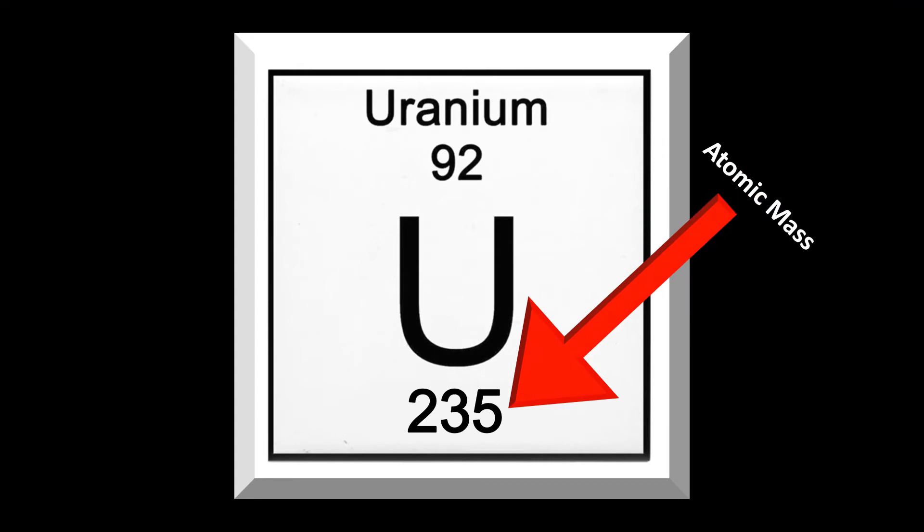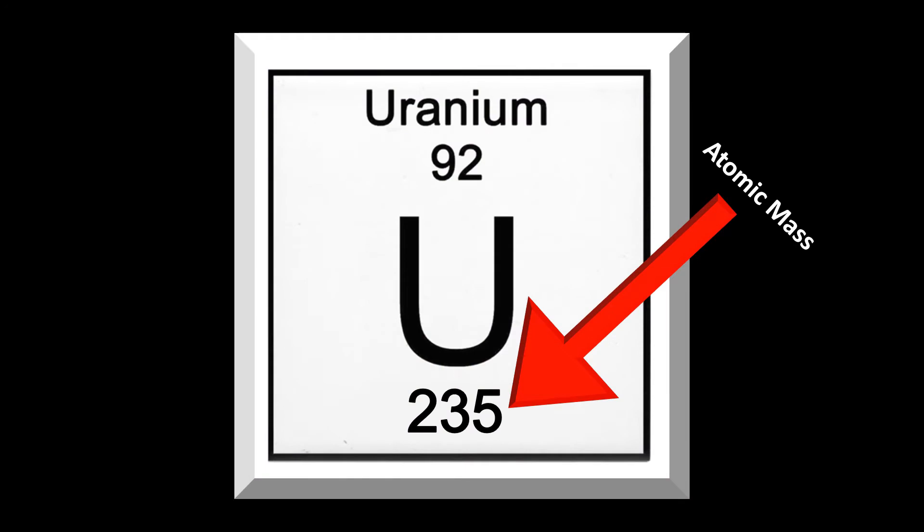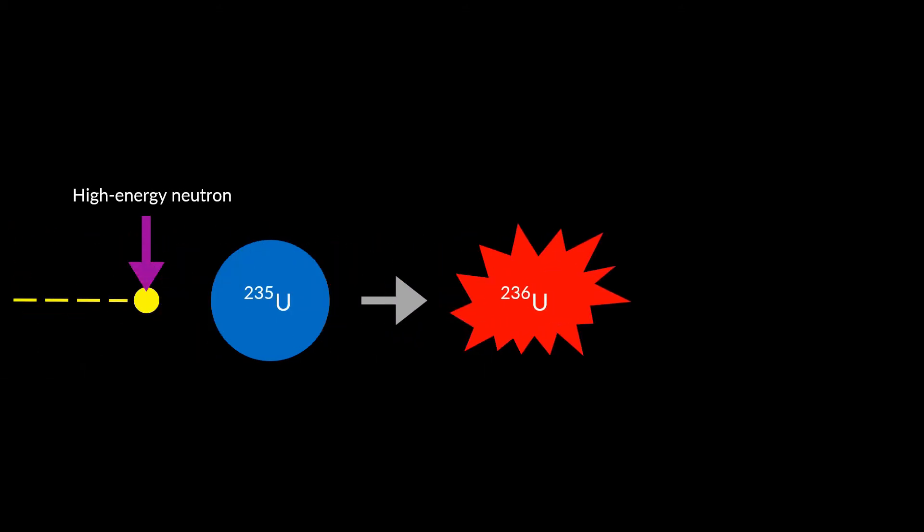235 is the atomic mass of the Uranium I have mentioned here. Uranium can have different atomic masses too, but let's stick to Uranium-235 here. Now what we will do is shoot a high energy neutron towards this atom which will change its atomic mass from 235 to 236 because we added a neutron.